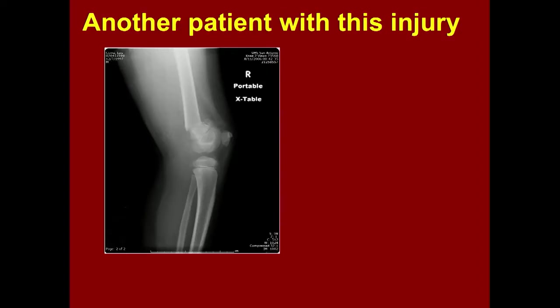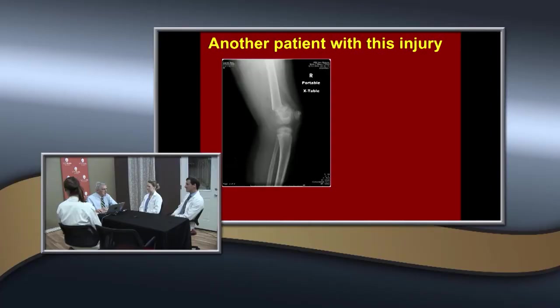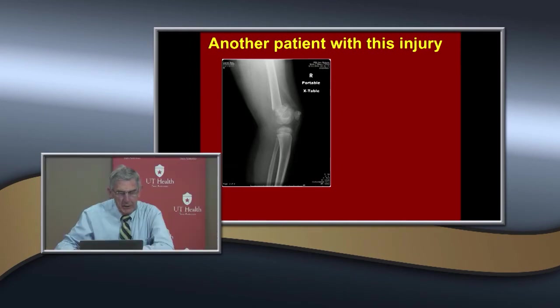Here's another patient with this injury. You see a fragment extended — a classic picture. How else can you control this today, since we don't put these patients in traction? Can you control it with a cast? You'd have to put it in almost 90 degrees of flexion — they wouldn't tolerate that, and it probably wouldn't help.